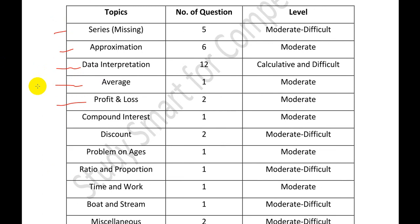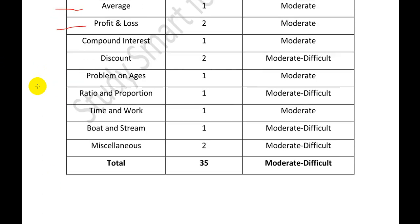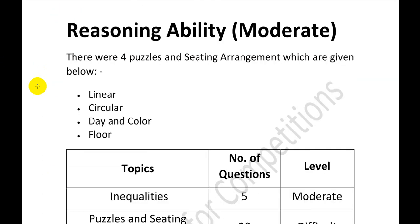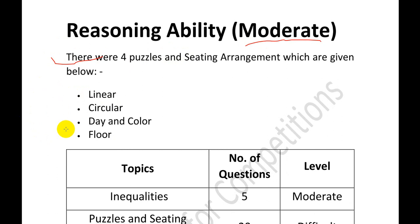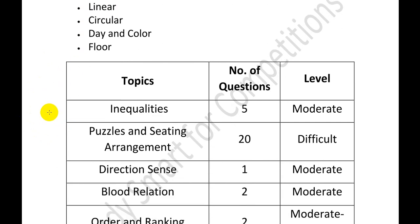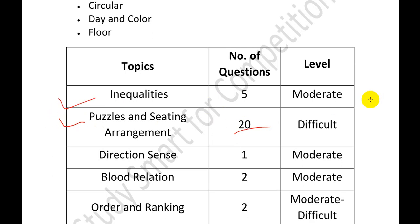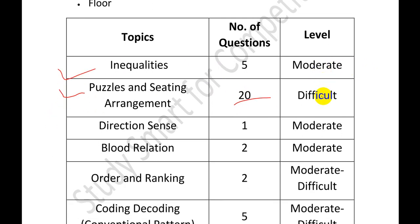Moving on to the reasoning section — overall it was moderate. There were 4 puzzles and seating arrangements: one linear, one circular, one day-and-color based, and one floor-based puzzle. Each puzzle had 5 questions, making a total of 20 questions from puzzles. Inequalities had 5 questions and were easy to moderate — these can be done easily.